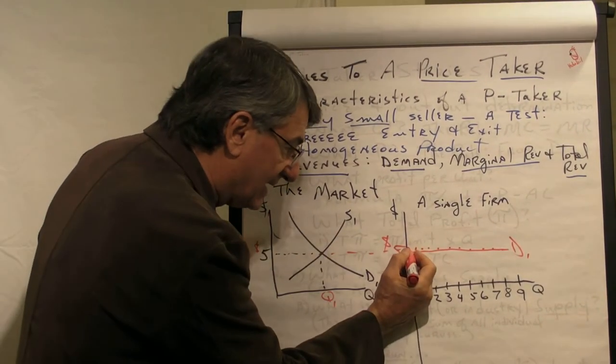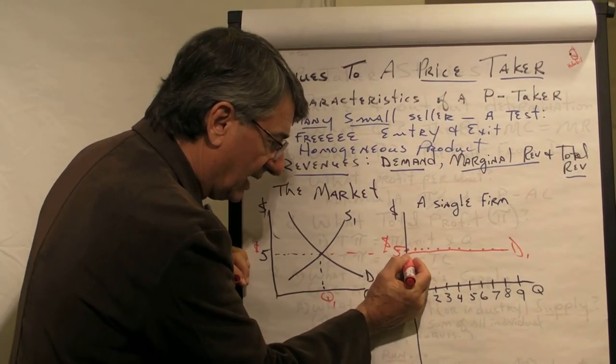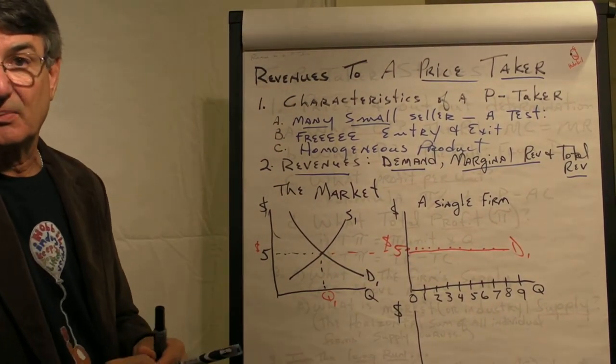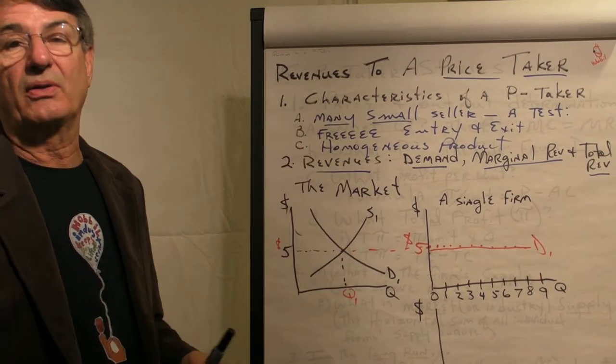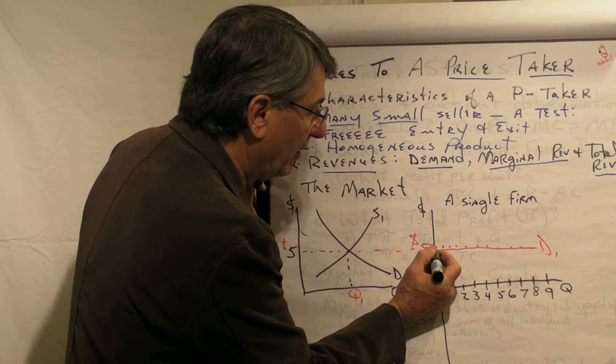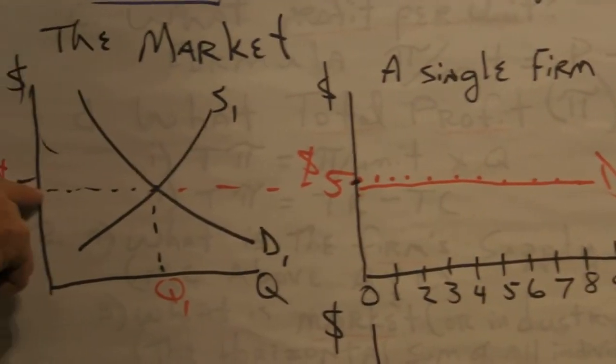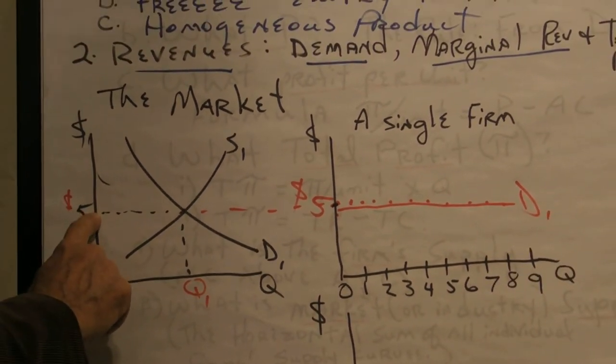If they raise their price even one penny, they will sell zero. It's assumed that they will not lower their price below $5 because they can sell all they're capable of producing at the $5 level. The $5.01 price, nobody would buy it at $5.01 because they can go into this market and buy all they want at $5.00. So that's why the market price is $5.00.